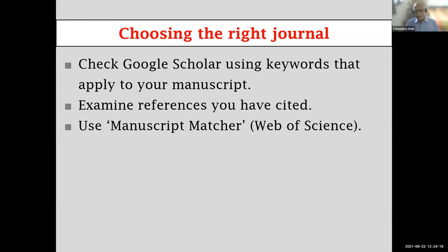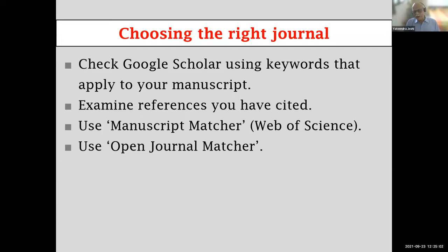All these web-based services work the same way: you paste the title and abstract of your paper into the provided windows, click 'recommend journal,' and the page runs an algorithm to match your content with its database. Manuscript Matcher recommends only journals within Web of Science. If you want to publish in open access journals, you can use Open Journal Matcher — it works exactly the same way and returns a list of open access journals that fit your paper.